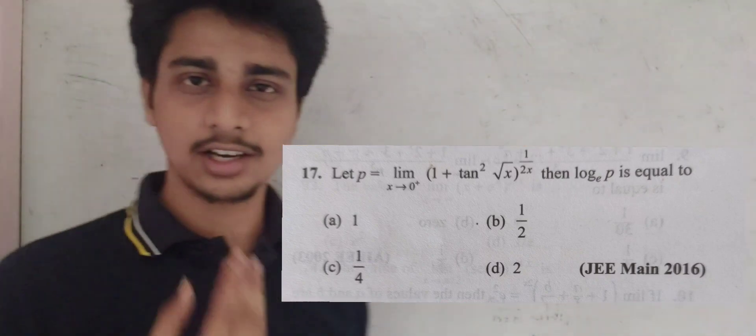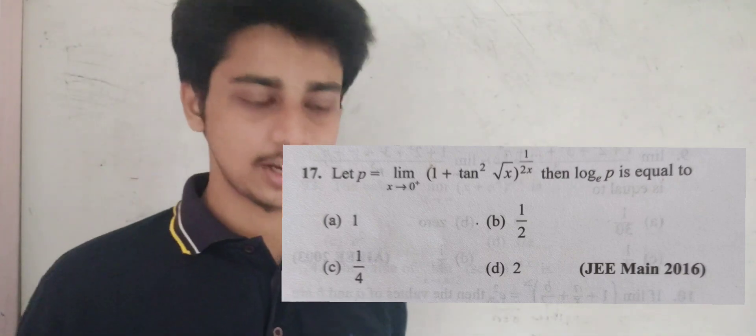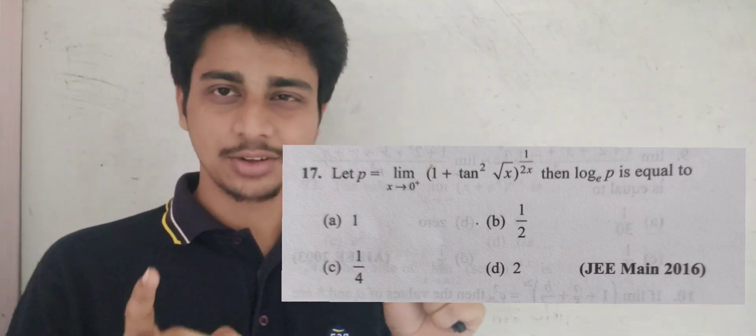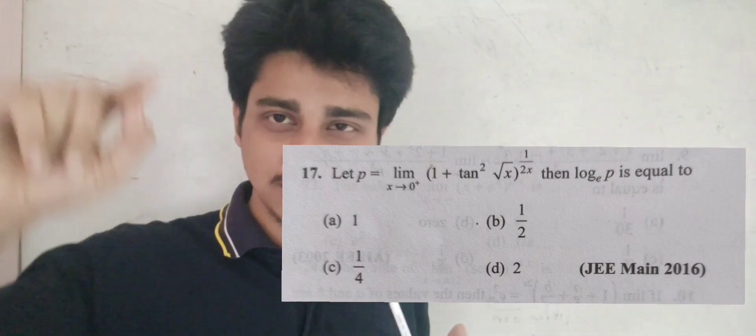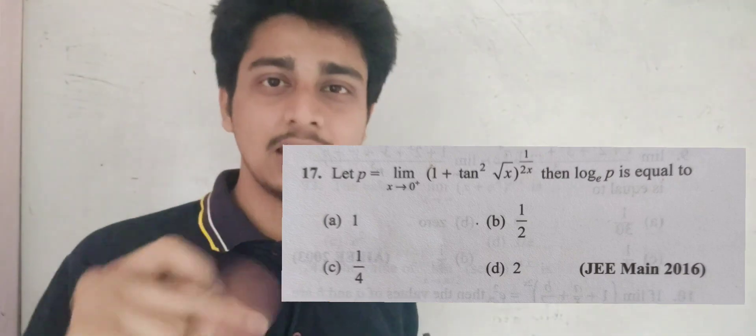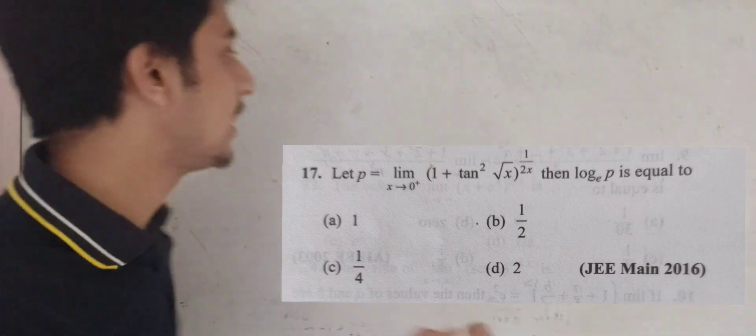If tan√x tends to 0, then 1 plus 0 equals 1. And what is 1 to the power of 1 by 0? This is the 1 power infinity indeterminate form.